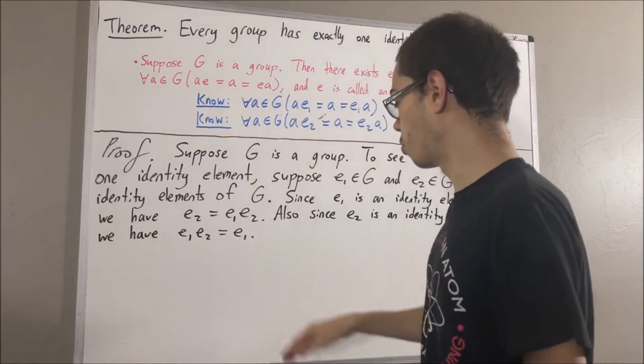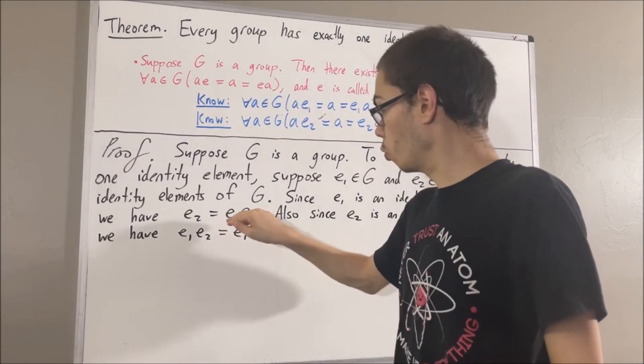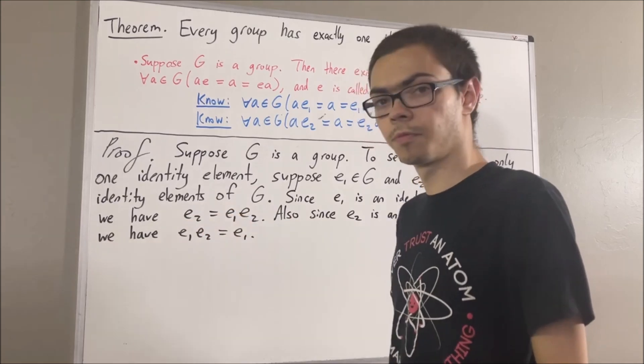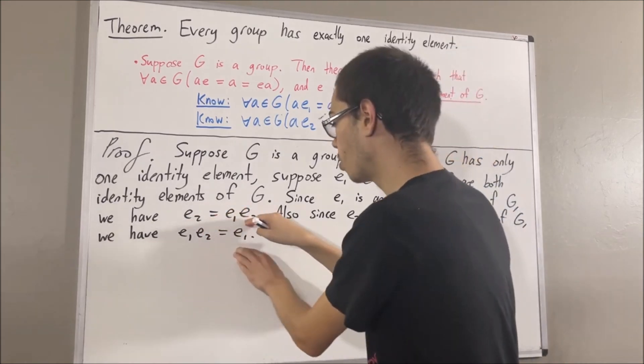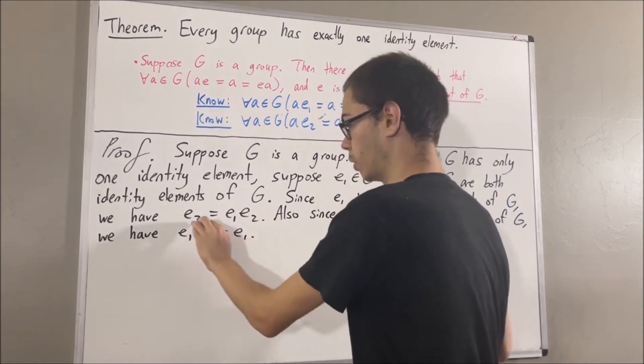So we see that e1 is equal to e1 times e2, which is equal to e2. So these two equalities tell us that e1 must be equal to e2.